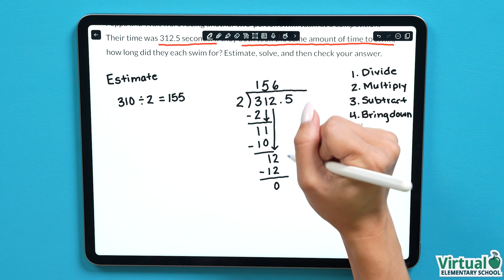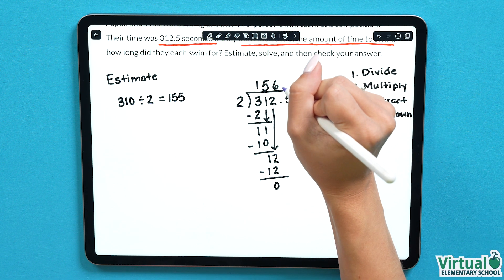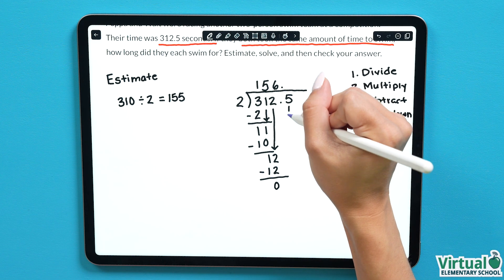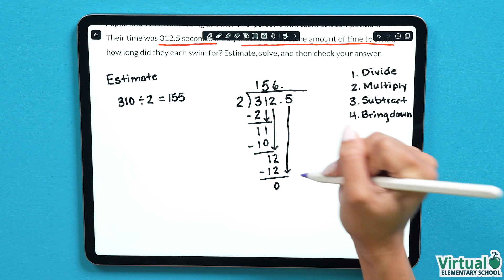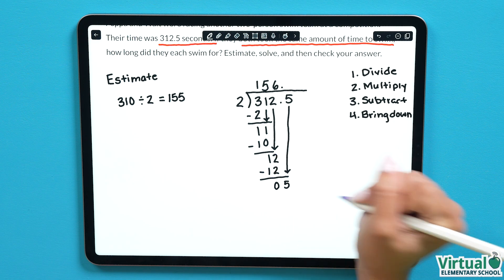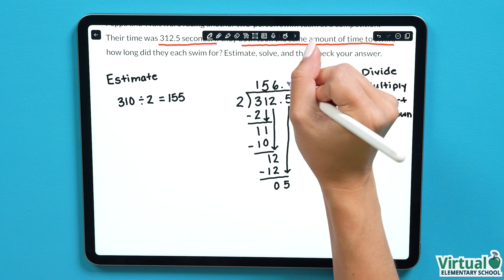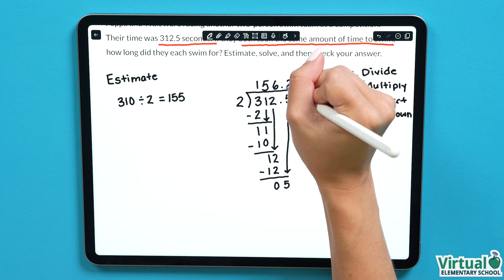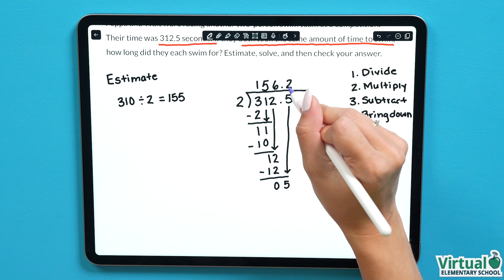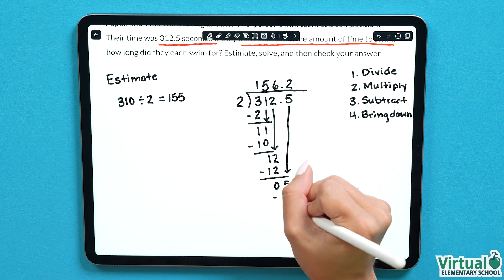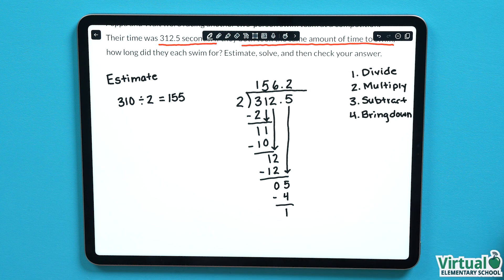Now we're at the decimal, but we don't need to bring it down here, we need to carry it above our line in the same place. We can bring down the 5 as our new number to work with. 5 divided by 2 goes in 2 times evenly, so 2 multiplied by 2 gives us 4. 5 subtract 4 equals 1.